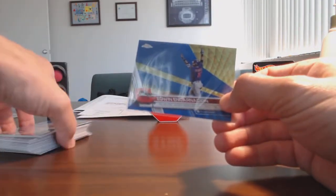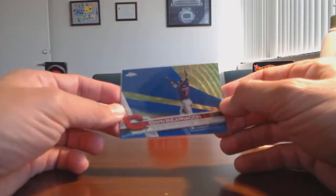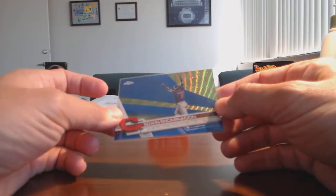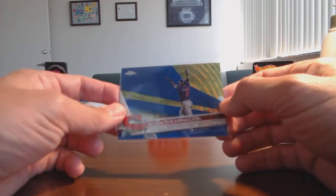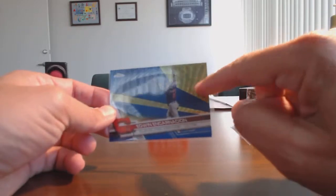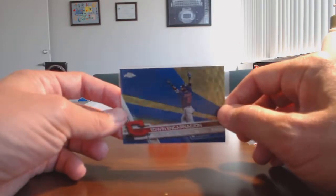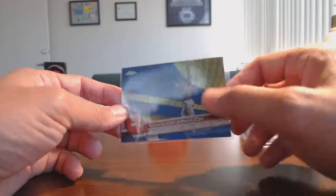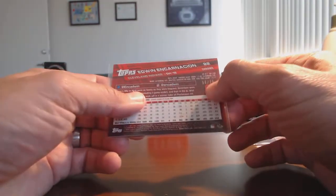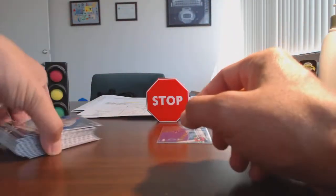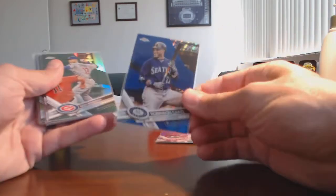You can kind of see it's the blue refractor version of this card, which is an Edwin Encarnacion, but you can see there's a little bit more of the wavy refractor quality to it. So they call this the blue wave, numbered to 75. Got this new camera but it doesn't focus. And then here's another one, Pat Neshek and Robinson Cano.